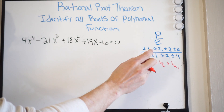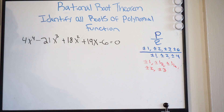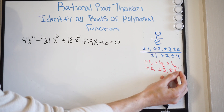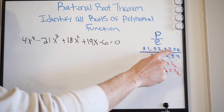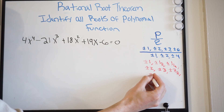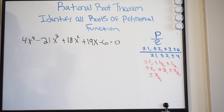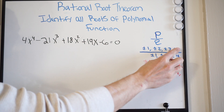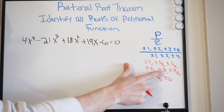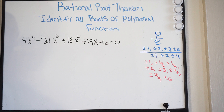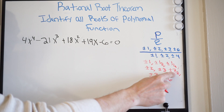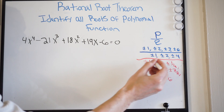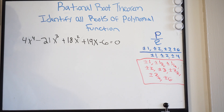Moving on to 3: 3 divided by 1 is plus or minus 3; 3 divided by 2 is plus or minus 3/2; 3 divided by 4 is plus or minus 3/4. Now let's go to the 6: 6 divided by 1 is plus or minus 6; 6 divided by 2 is 3, which we already have; 6 divided by 4 reduces to 3/2, which we already have. So these are my possible rational roots of this function.